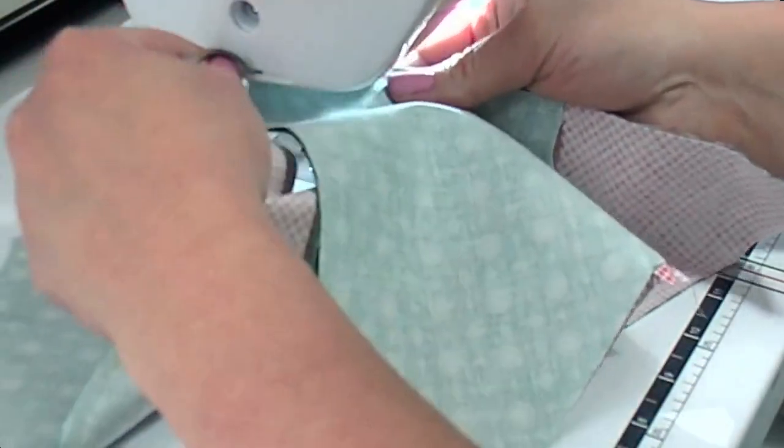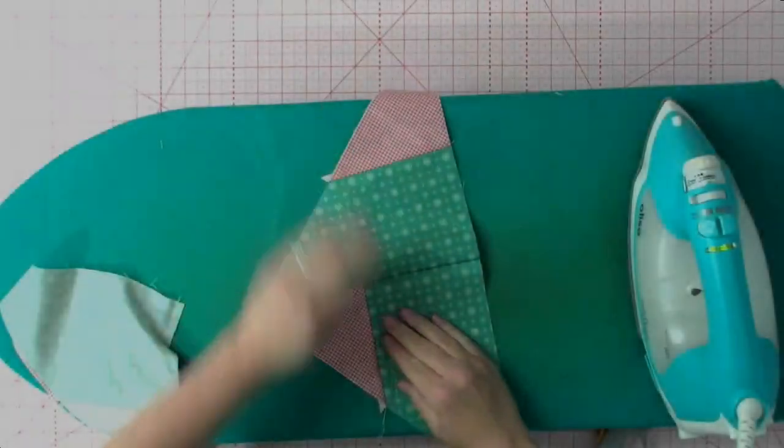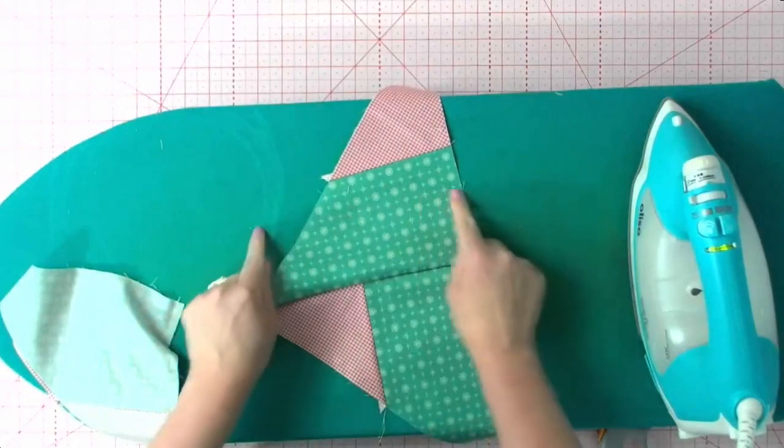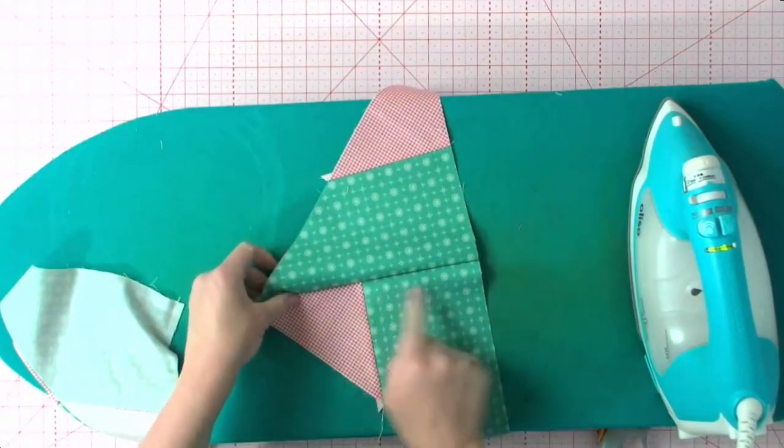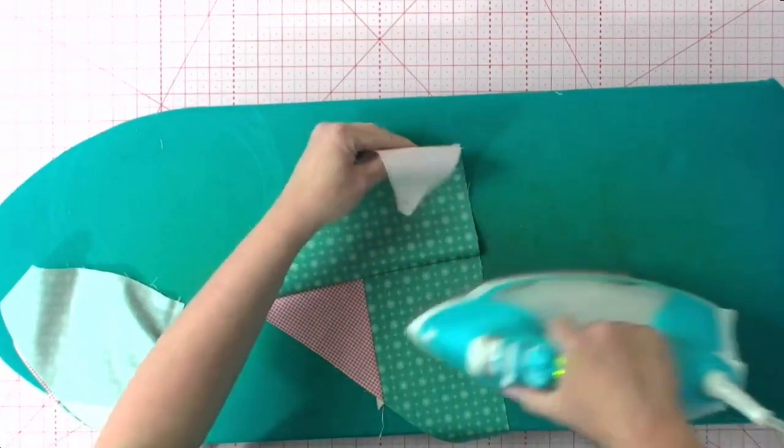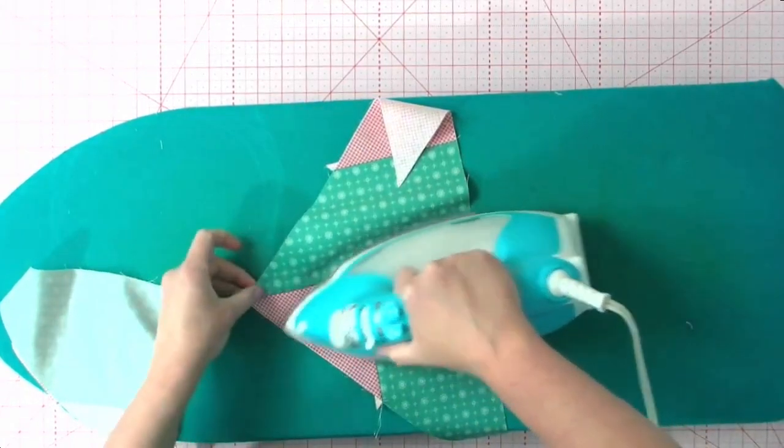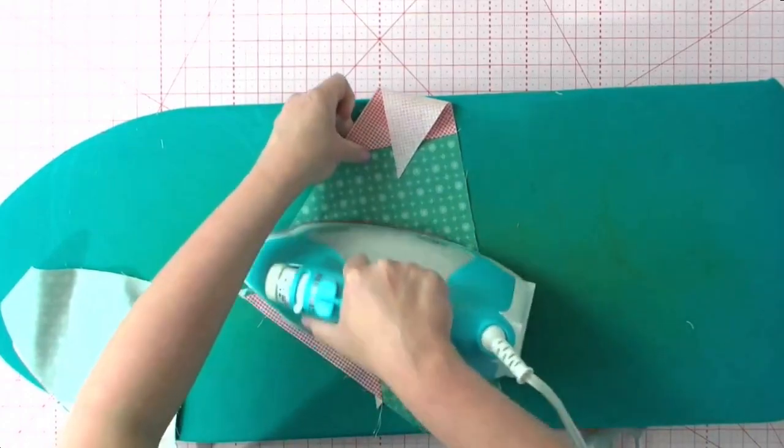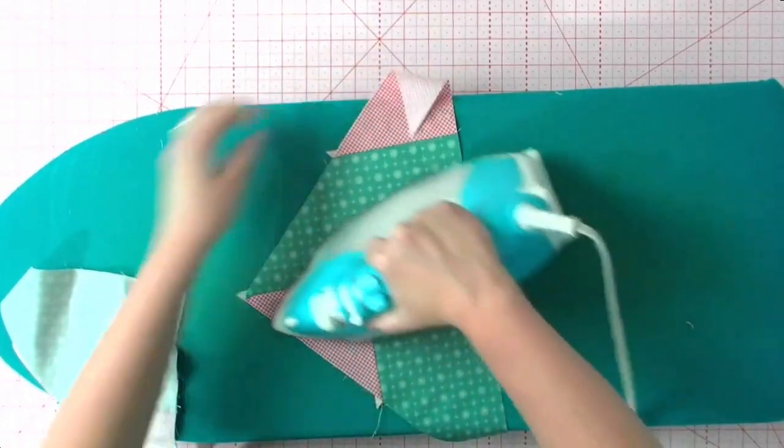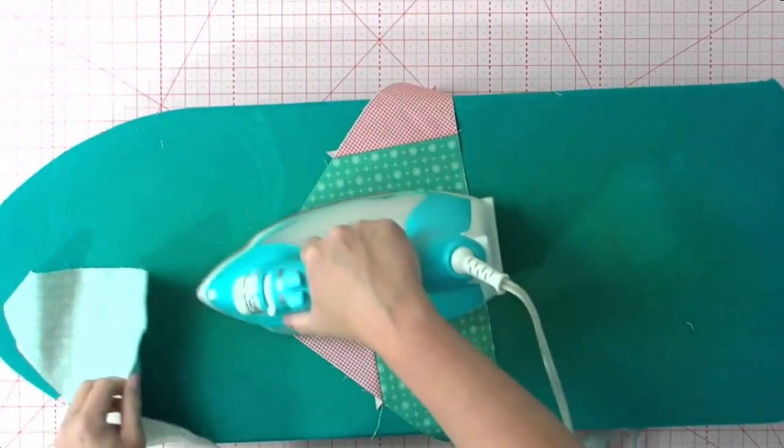Let's go back to the ironing board. So I'm going to iron both of them going towards the longer side of the block instead of this side. That way they're both going in the same direction so that when they mirror each other, we can nest those seams.